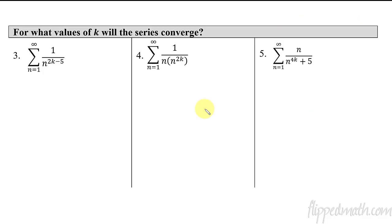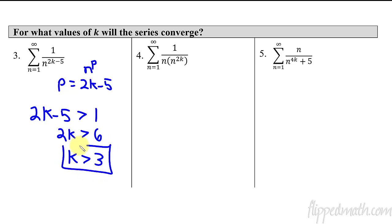All right, a few more types of problems that you will see today in the practice. Here we have, what value of k would make this thing converge? Well, this is just saying we have n raised to some value of p. But in this case, what is p? p equals 2k minus 5. So really, we're just focusing on how can we make this exponent, 2k minus 5. In order for it to converge, it would have to be larger than 1. So we say it's larger than 1, and then solve it from there. So we get 2k is greater than 6, and k is greater than 3. And that's it. So if k is greater than 3, this series will converge. If it's less than or equal to 3, this series will diverge.